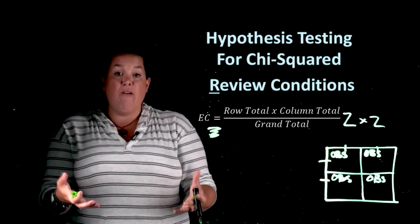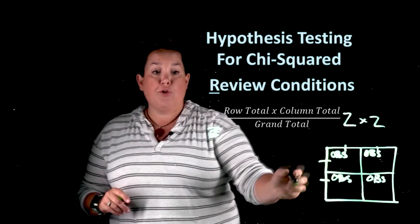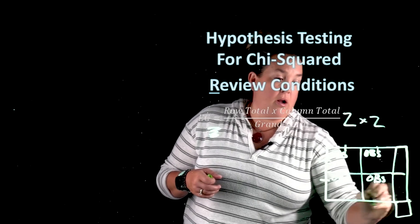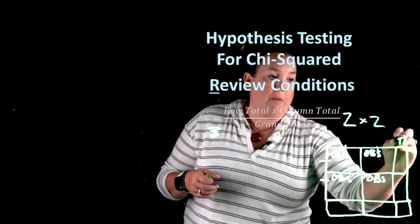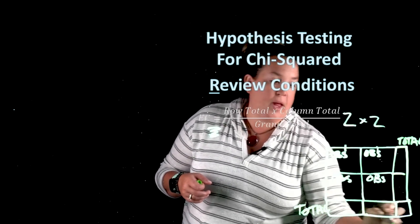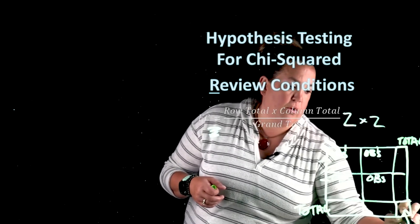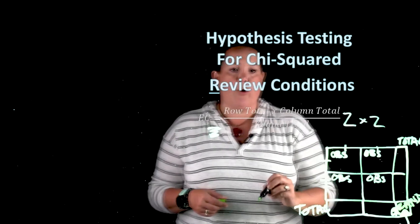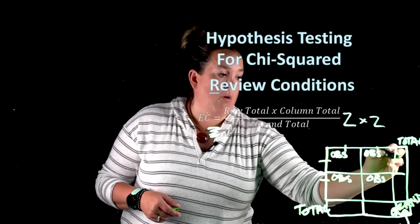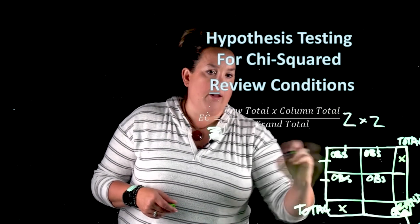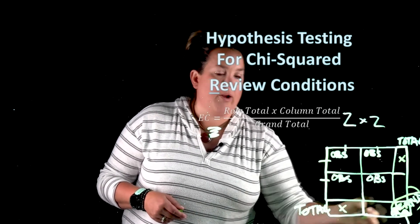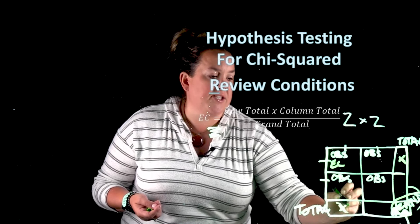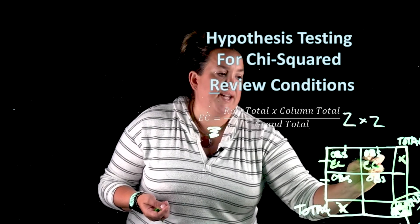What we're now talking about is something called an expected count. An expected count is what you would expect to see if there was no association between these two variables. The way it's calculated is: take the row total times the column total — remember, columns go up and down, rows go left to right — then divide by the grand total, which is in the bottom right-hand corner of the table.